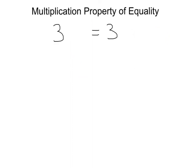Let's move on to the multiplication property of equality. Here we have three equals three — well, that's pretty straightforward, that's true. Let's go ahead and multiply each side by two. So I multiply the left side by two, I multiply the right side by two. That's going to give me six on the left and six on the right, which are still equal. That would be an example of the multiplication property of equality.